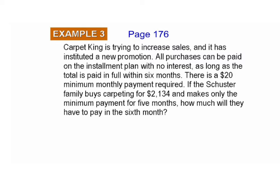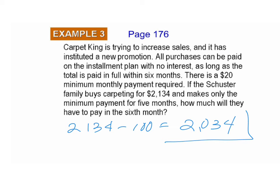That $20 times 5 is $100, so we are going to take our amount, $2,134, and subtract $100. What's left over — that's what the Schuster family is going to have to pay — $2,034. Get that down in your notes and we will proceed.